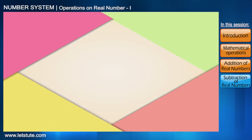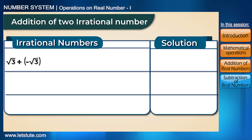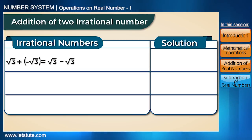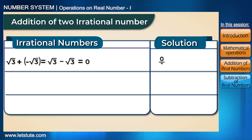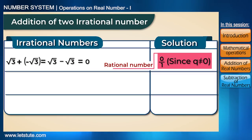Now let's consider irrational numbers. Root 3 plus negative root 3 equals 0, which can be written as 0/1 — a rational number. So the sum of two irrational numbers can be rational.